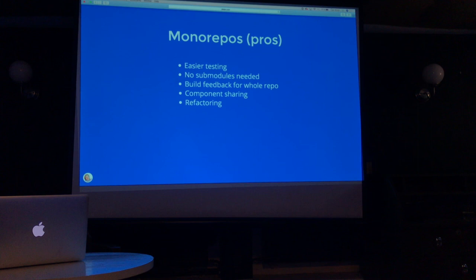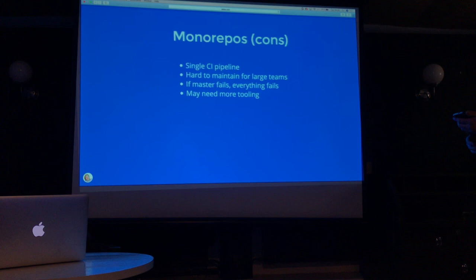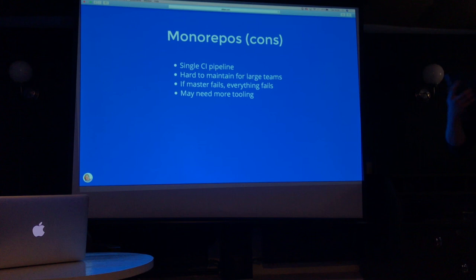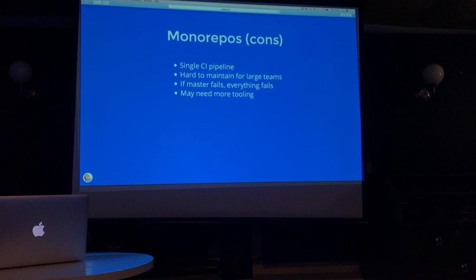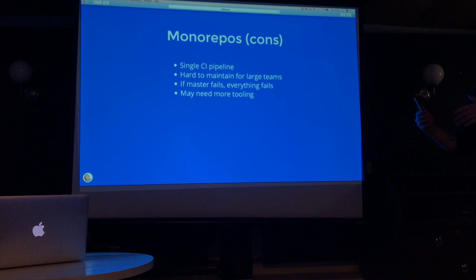And the cons: you have a single CI pipeline, or you can have pipelines, but every time you push something, this main pipeline will run, which means it may cost you some time. And you may need to deploy all the services again every time, which means you get immutable deploys, which is not really what microservices want. It's really hard to maintain for large teams — and by large teams, I mean like 30 to 40 people. And the biggest pain for us was that if master fails — if somebody merges something into master and it fails — then nobody can actually work, because every new branch from master will fail also.